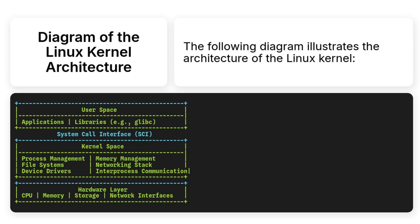The Linux kernel architecture consists of three main layers: the user space, the kernel space, and the hardware layer. User space includes applications and libraries. Kernel space handles processes and memory management, file systems, networking, device drivers, and inter-process communication. The hardware layer includes CPU, memory, storage, and network interfaces.